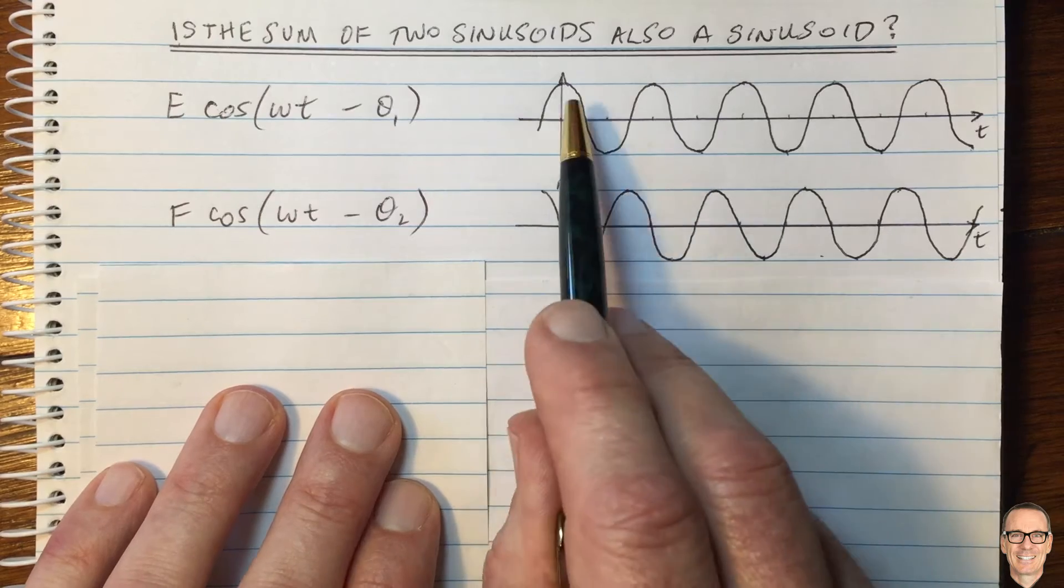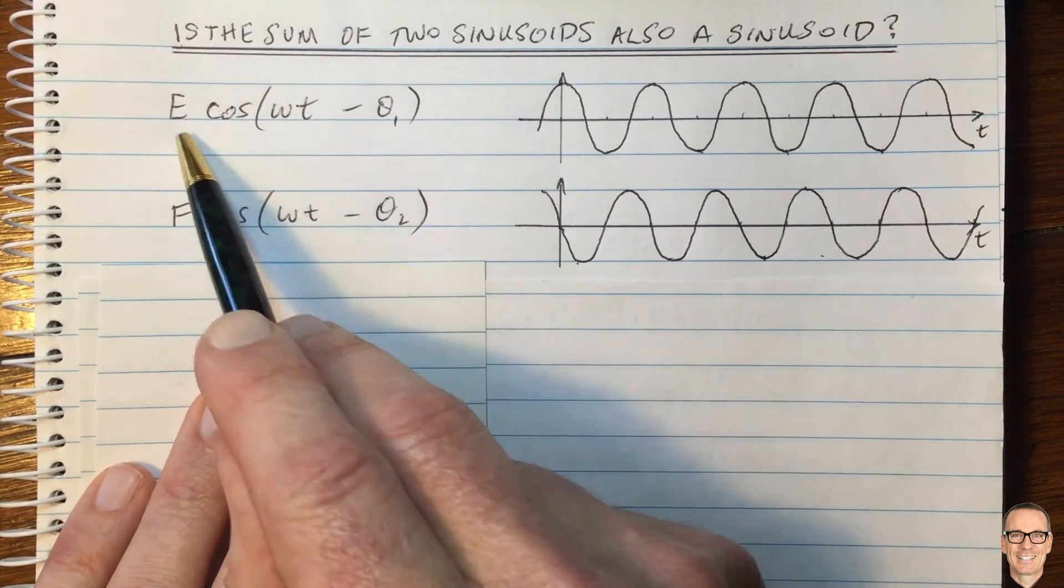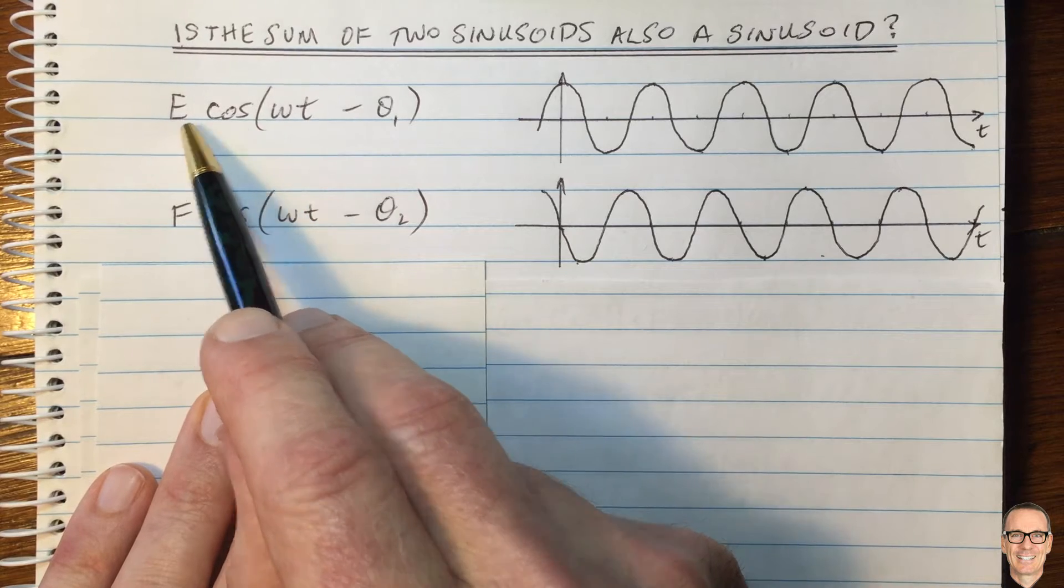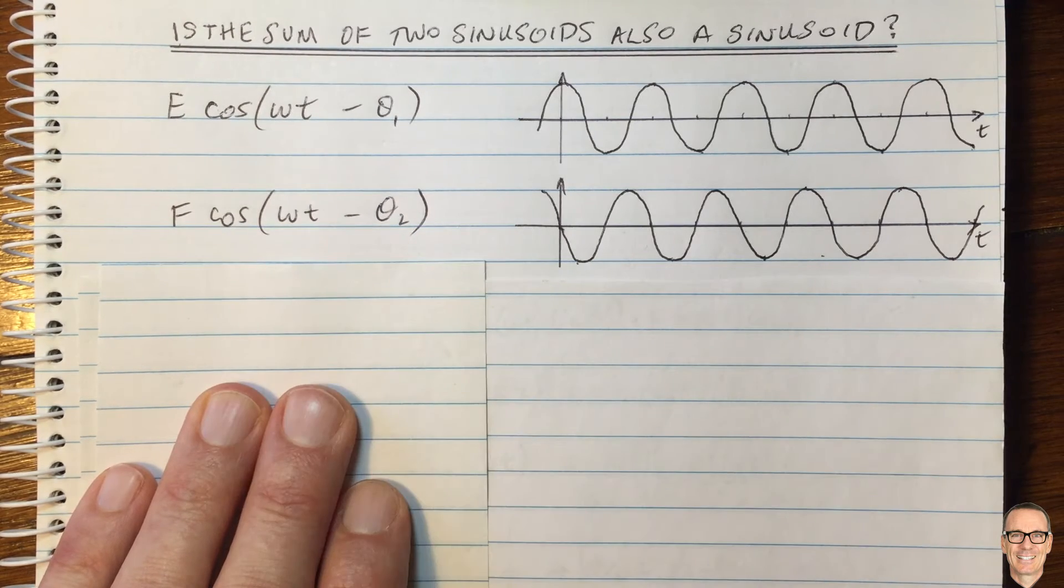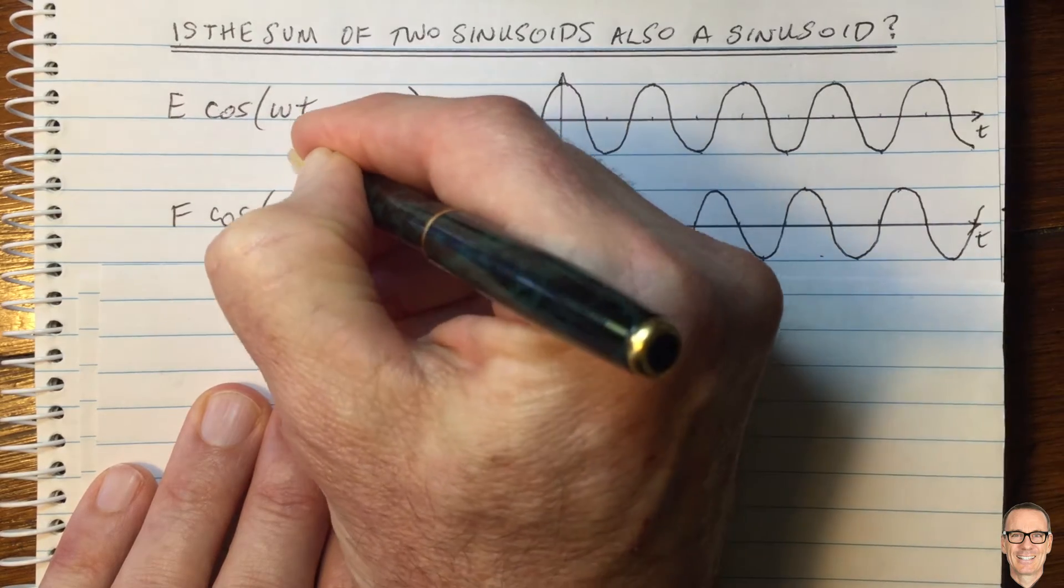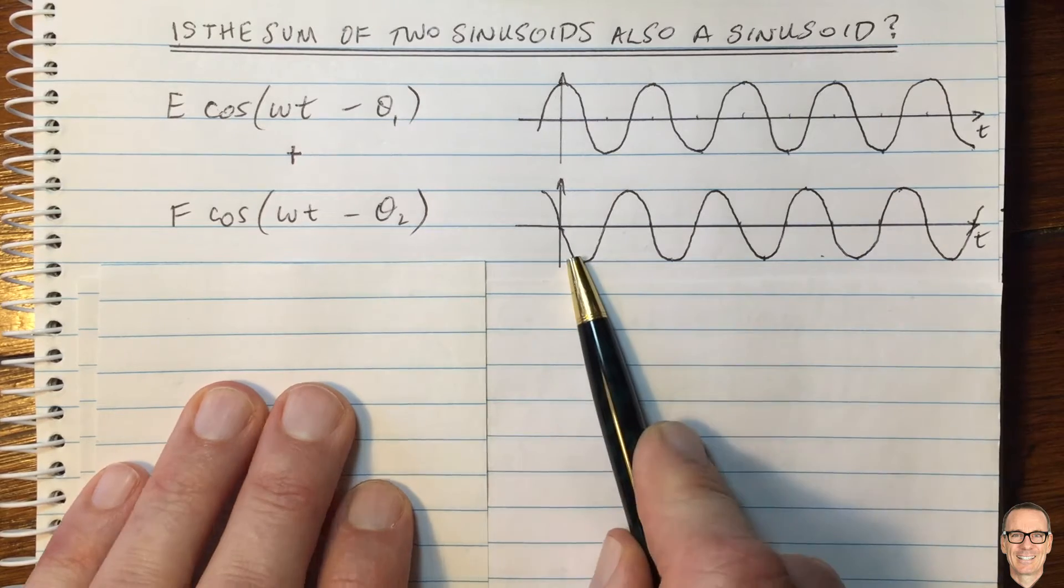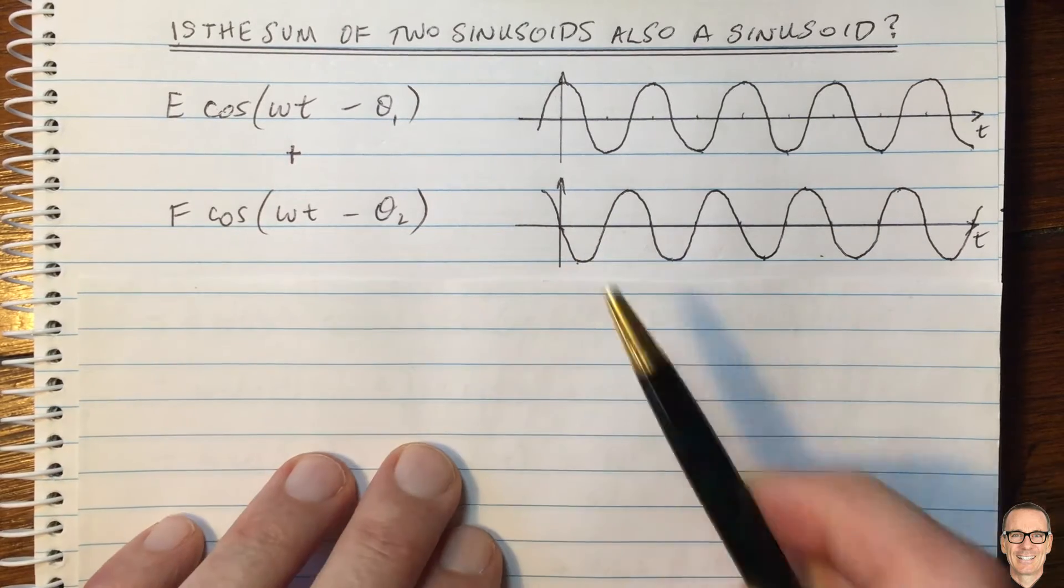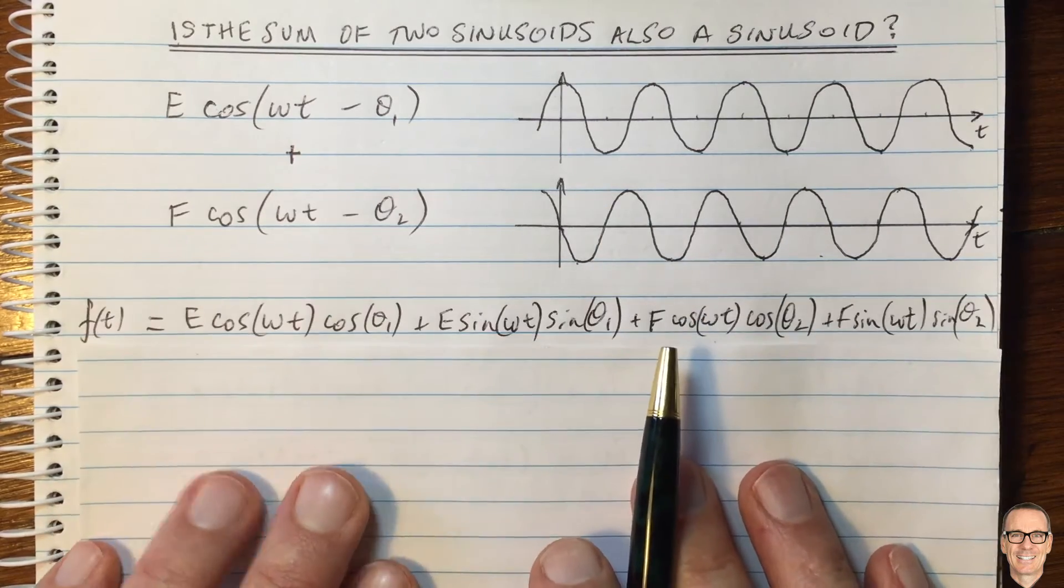So I've drawn them with particular phases, but let me take two general sinusoids here. So cos with a certain amplitude and phase one, and another one with a different amplitude and phase two. And we're going to add these together. And I'm just going to walk you through the maths to demonstrate this using standard trigonometric expressions from high school maths. So here we are.